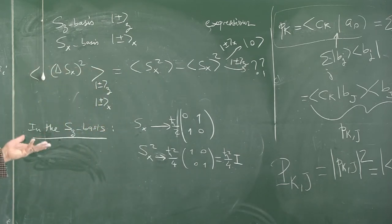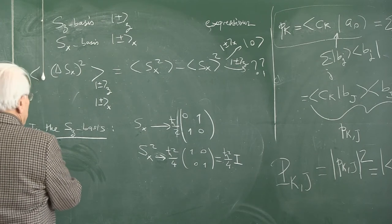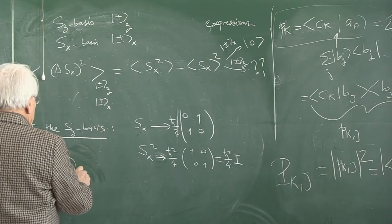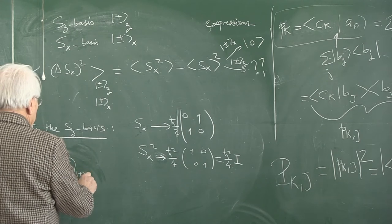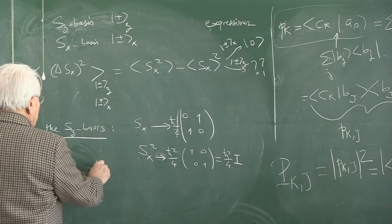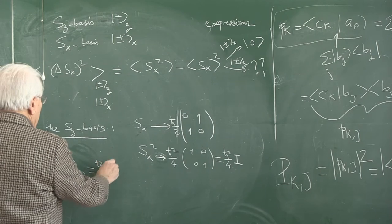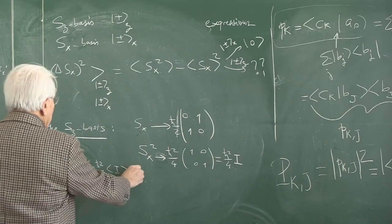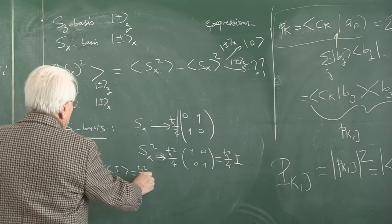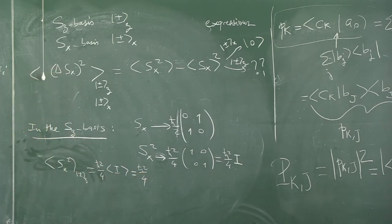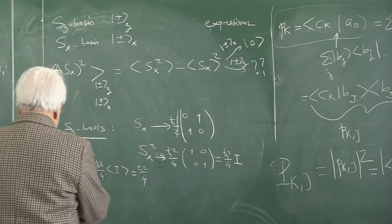It is the corresponding matrix in that basis — ℏ²/4 times the identity. Whatever basis you use, the Sx squared in the Z basis is ℏ²/4 times the identity, which is just ℏ²/4. As far as the square is concerned, being proportional to the identity operator is a trivial matter. It is the Sx itself that makes the difference.